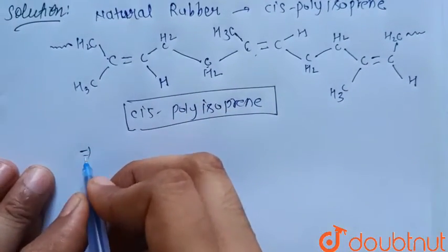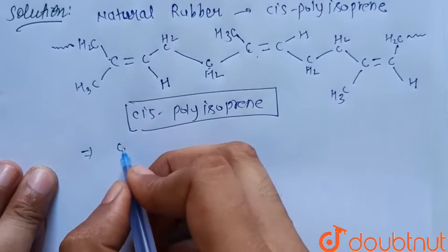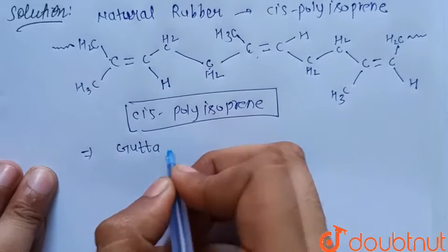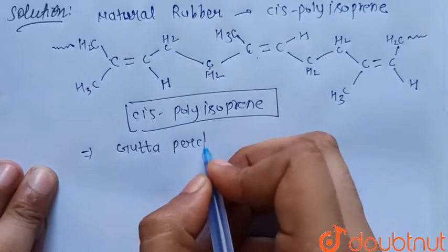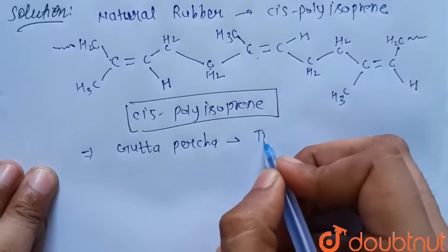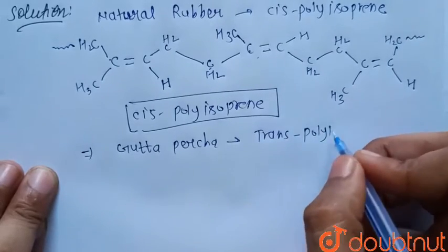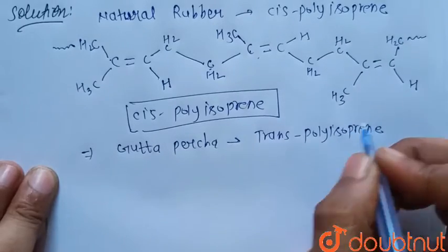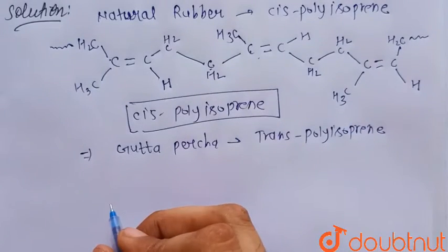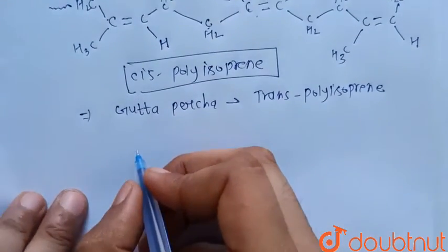And we know that now consider the second one gutta percha. Gutta percha, we know that it is the trans polyisoprene and its structure is as follows.